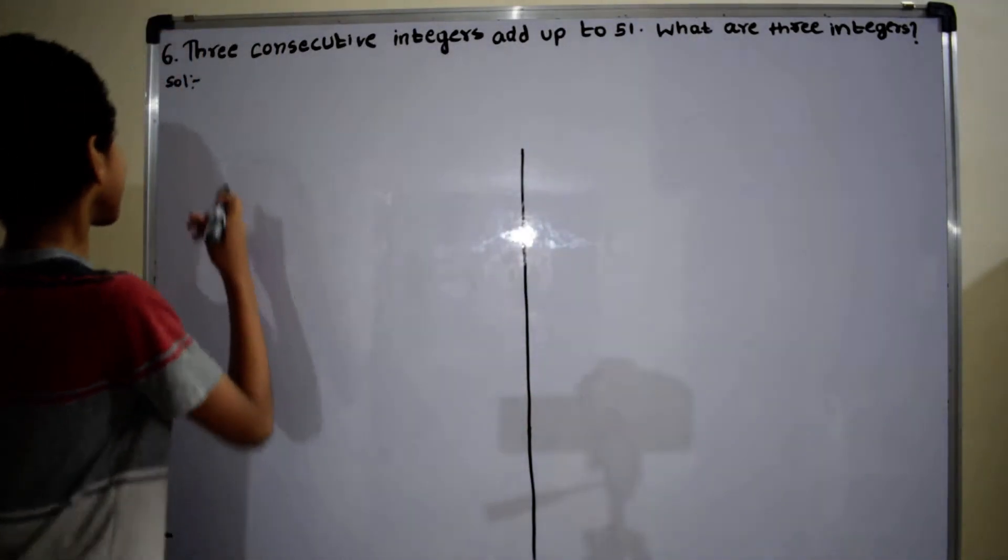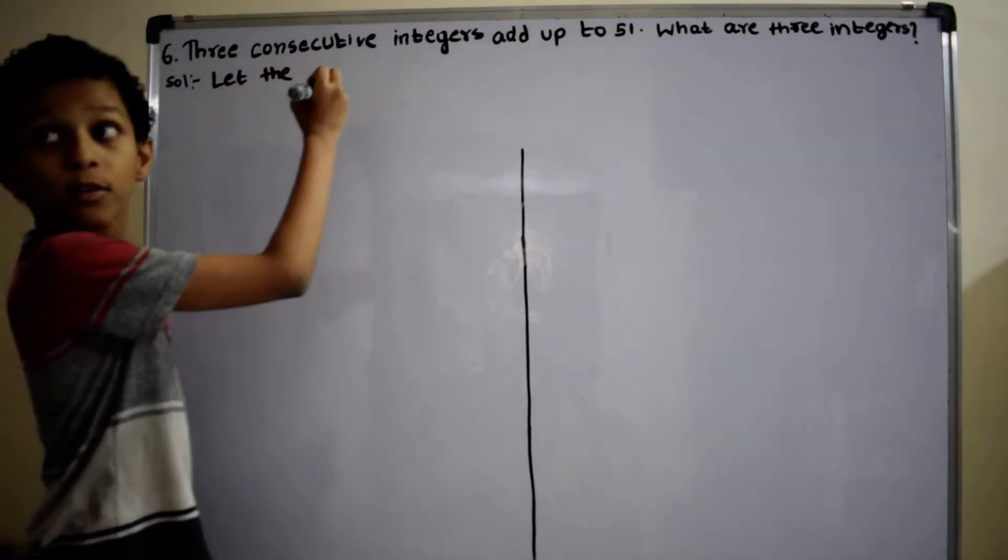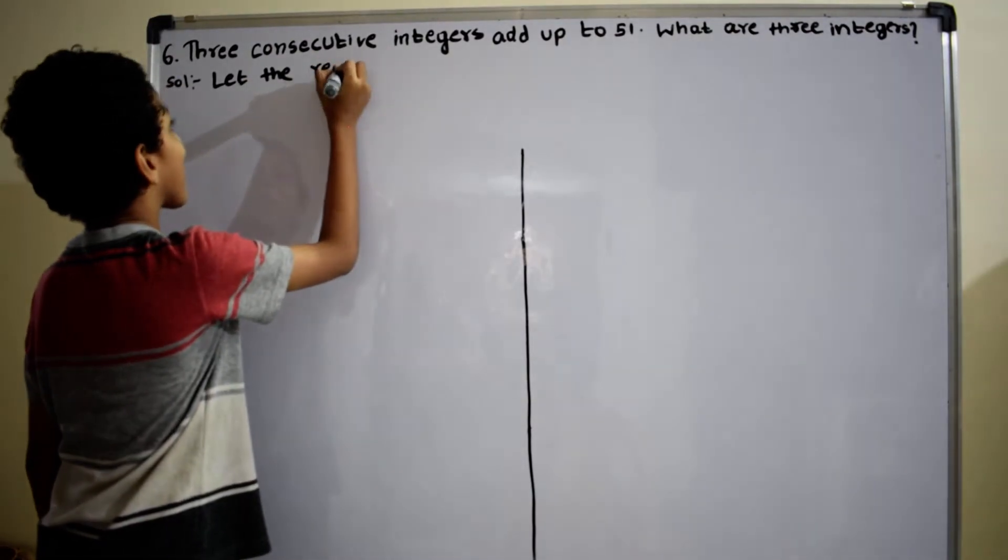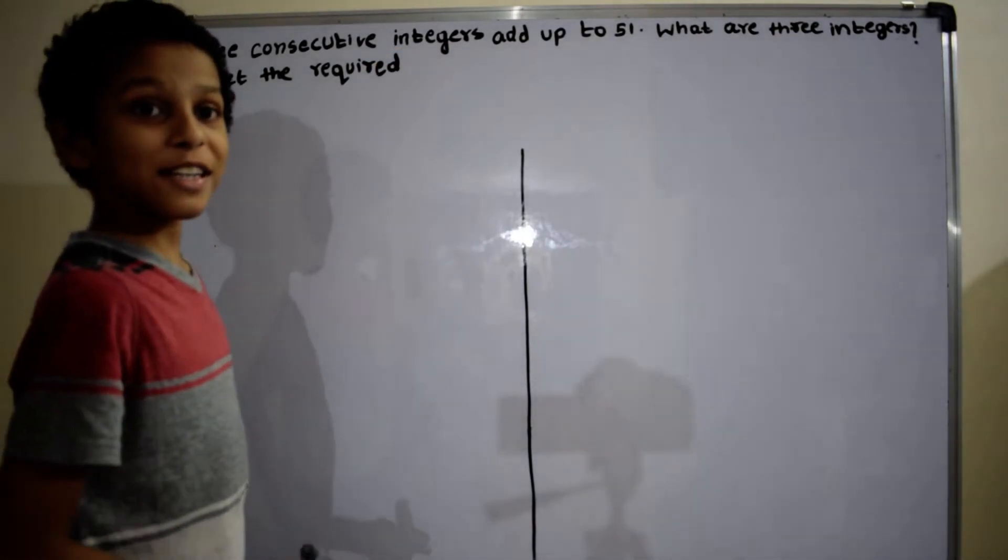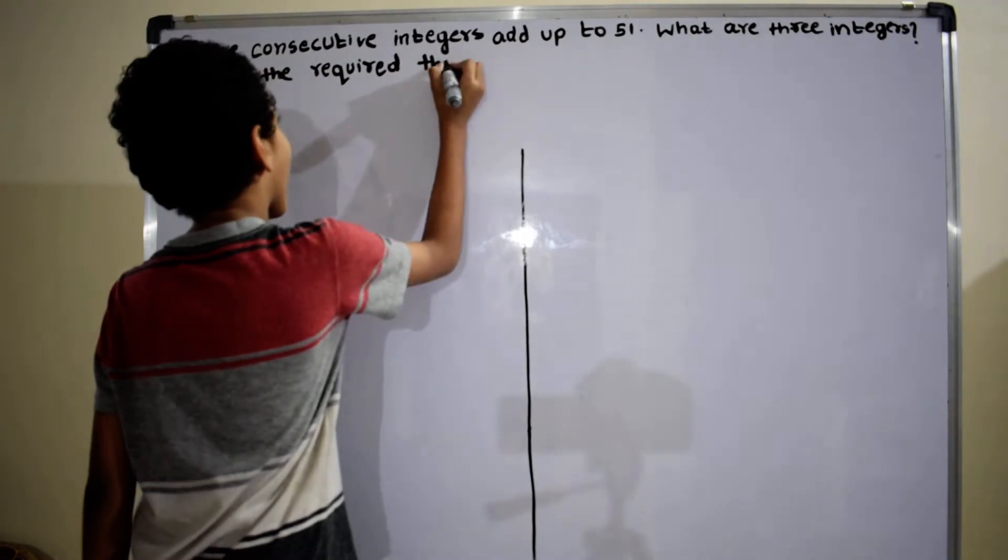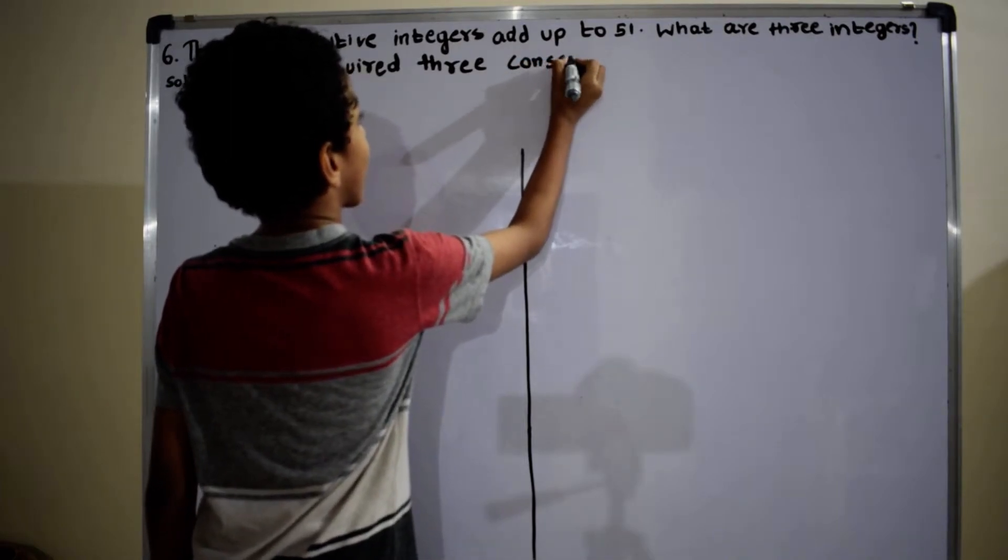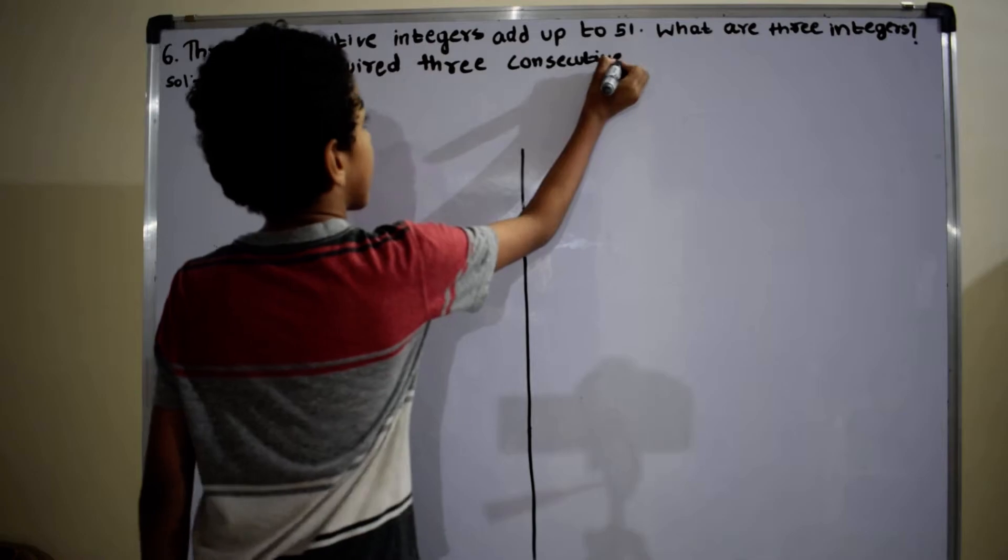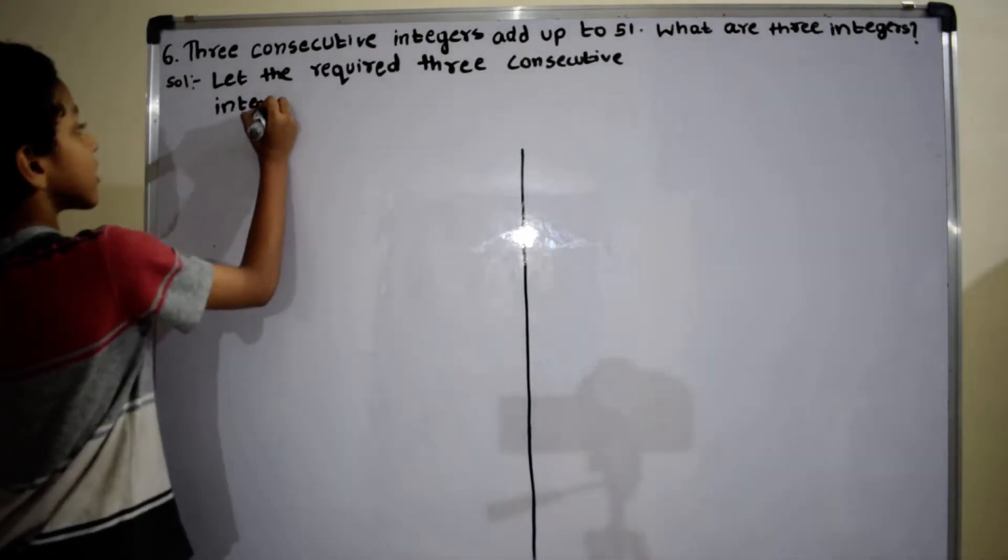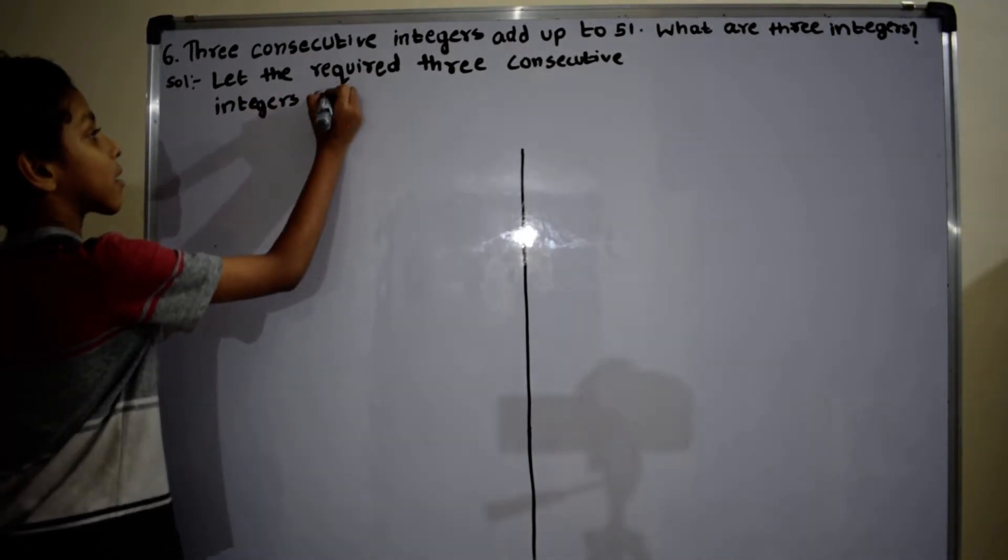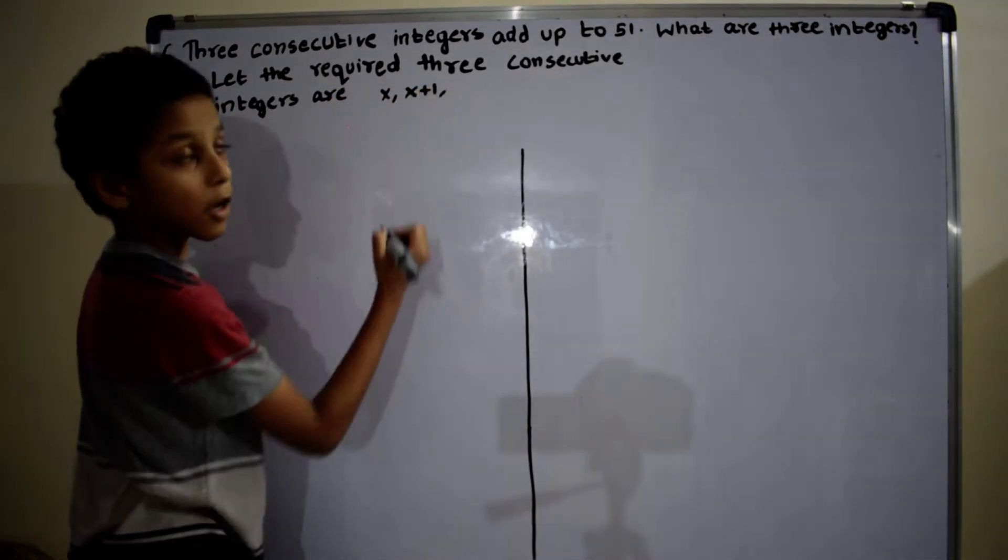Let's start the solution. Let the required 3 consecutive integers be x, x plus 1, and x plus 2.